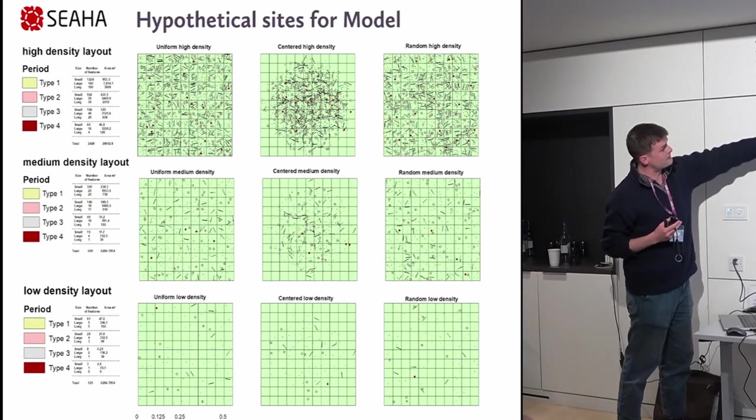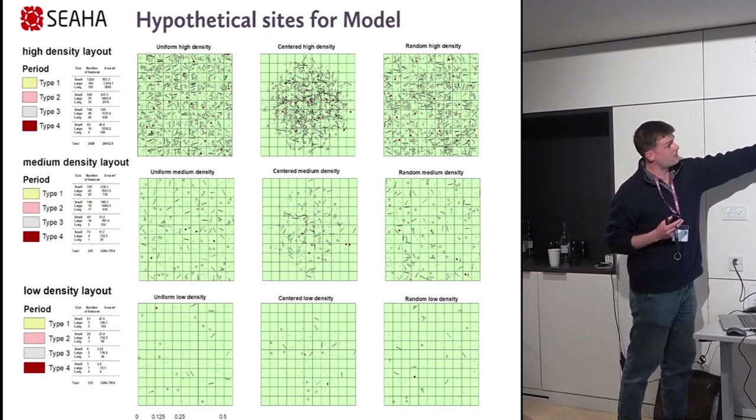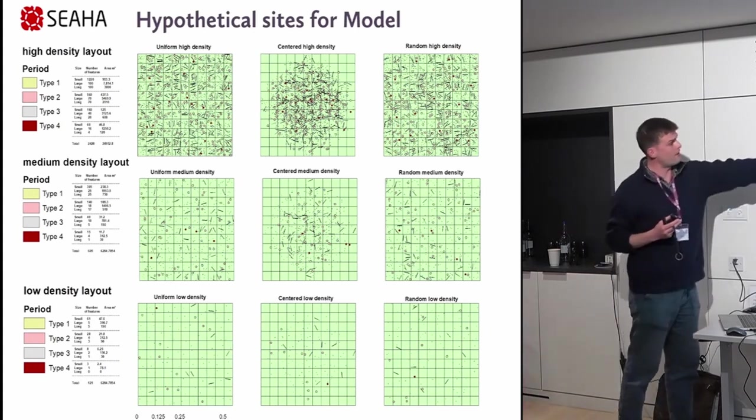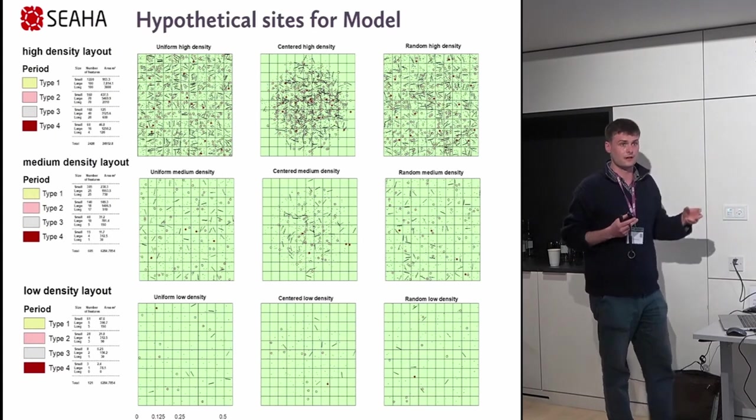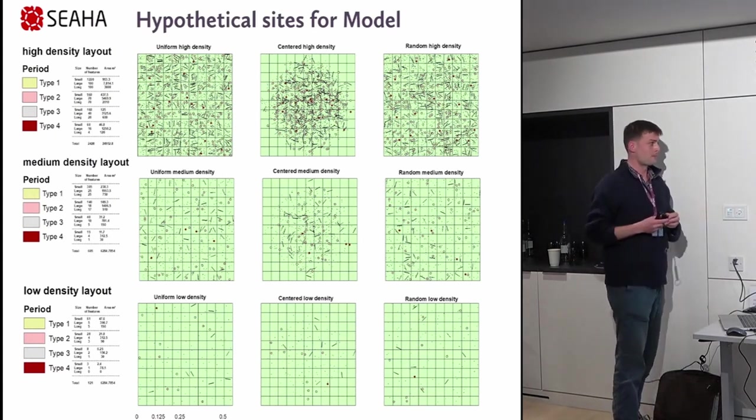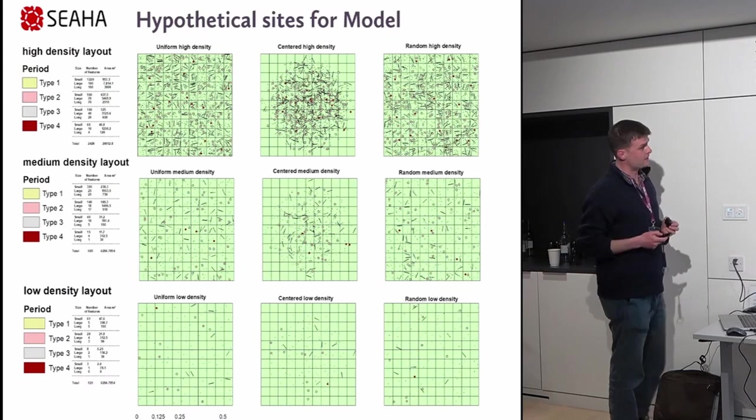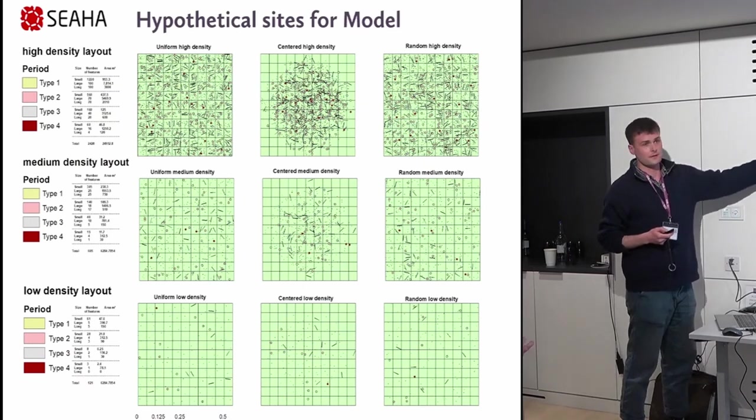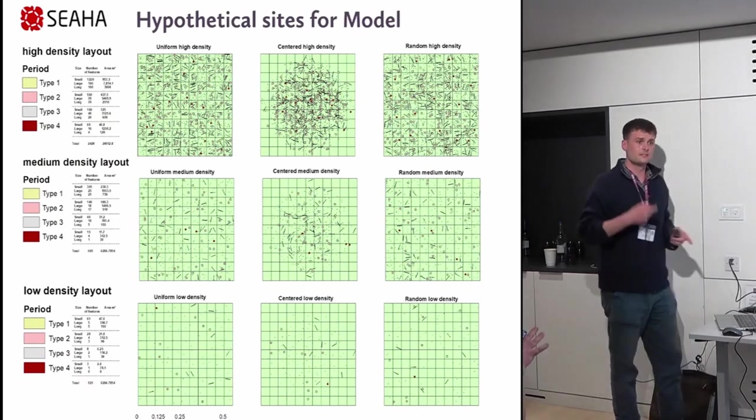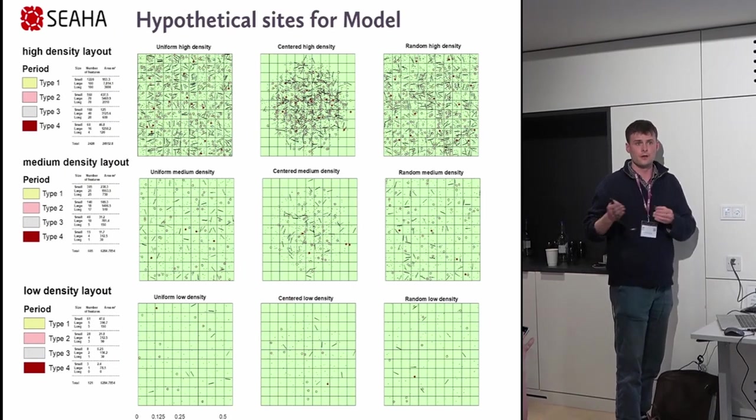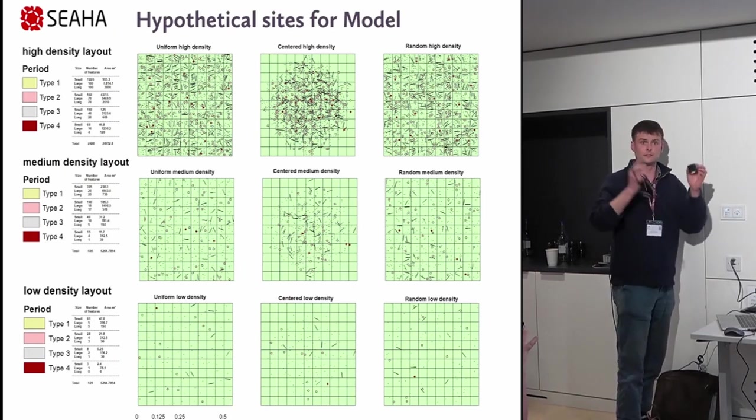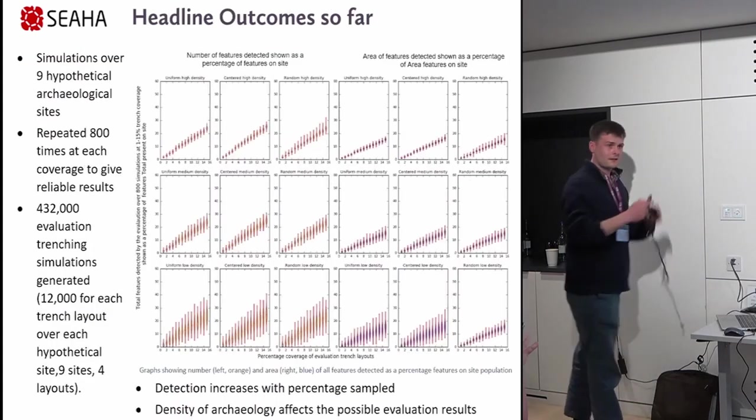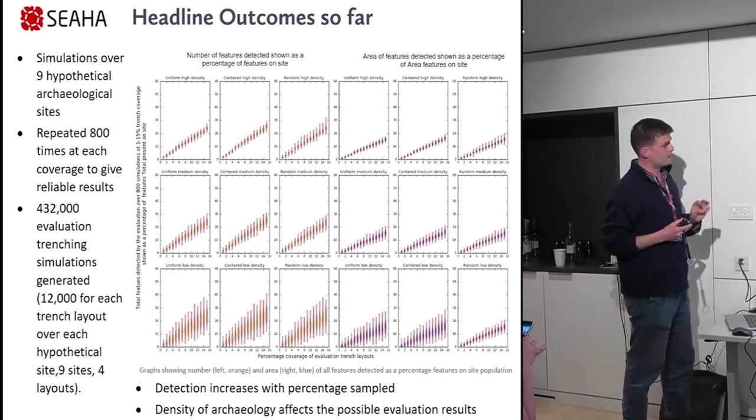Another thing I was looking at is whether the density of finds on site affect the conclusions of your evaluation, and also whether or not the layout of the features on site affect your evaluation. Here are the nine hypothetical sites. Random is just the features laid out randomly. The types are meant to represent different periods of archaeology, because then we can begin to see if our evaluations are skewed based on how well different quantities of features show up in our trenching layouts. So without further ado, here's some very quick results.